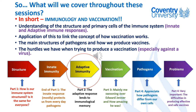We spoke about the innate immune system, which is basically that immune response that has a housekeeping aspect to it — it protects us from day-to-day pathogens we come into contact with. However, sometimes our innate immune system is not sufficient to remove these threats from the body, and that's where the adaptive immune system needs to be activated.